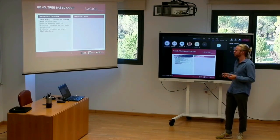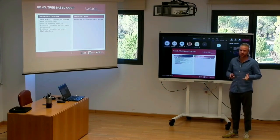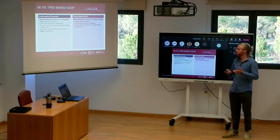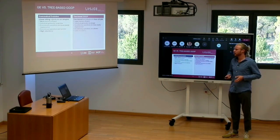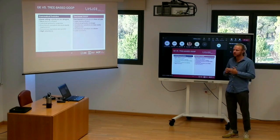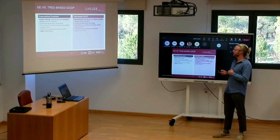Tree-based Grammar-Guided Genetic Programming has individuals that are less simple — it's less memory-efficient, individual generation is slower, and evolutionary operations are less easily implemented and slower. But almost the entire tree is used as the individual itself, so there's no information kept that is irrelevant to the phenotype.